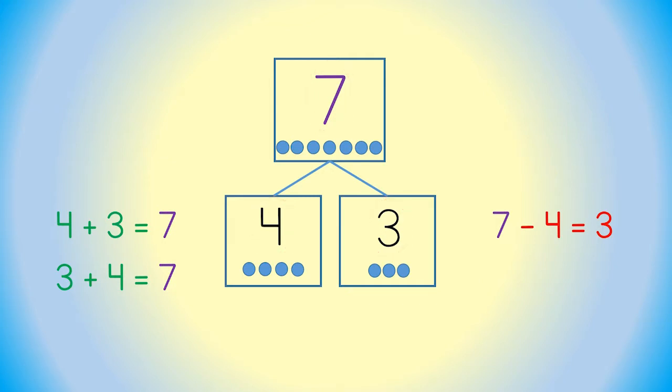What is the other subtraction sentence that you could use? You could also say, 7 minus 3 equals 4. Here, you have 4 different sentences created with one number bond.